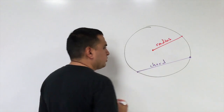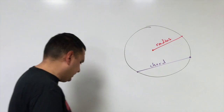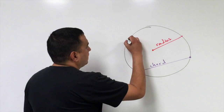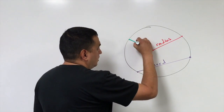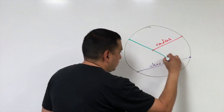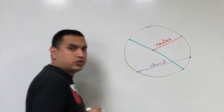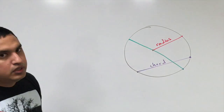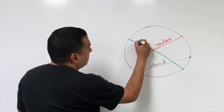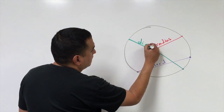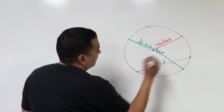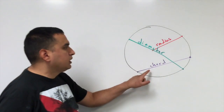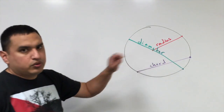Now there's a special type of chord that goes from one edge of the circle to the other side, but it goes through the center. You've probably heard of this one — it's called the diameter. So the diameter is a special type of chord because it goes through the center.